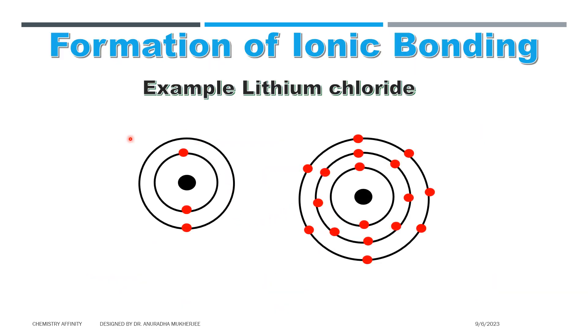This is the orbital diagram of lithium atom, and this is the orbital diagram of chlorine atom. Lithium atom has one valence electron; chlorine atom has seven valence electrons.